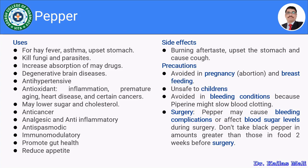Moving towards the precautions and warnings. Black pepper should be avoided in pregnancy because there may be chances of abortion. It should be avoided during breastfeeding. It is not safe for children. It should be avoided in bleeding conditions because it comprises piperine, which slows down blood clotting. It should be avoided before surgery, as pepper may cause bleeding complications or affect blood sugar levels during surgery. Don't take pepper in amounts greater than those in food two weeks before surgery.